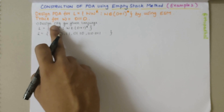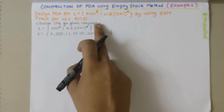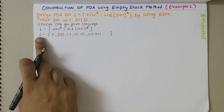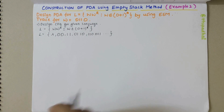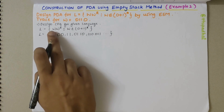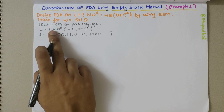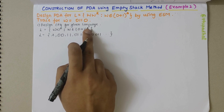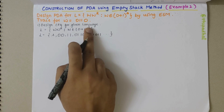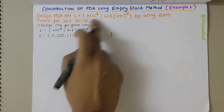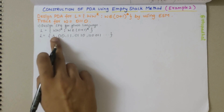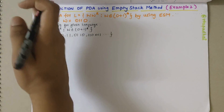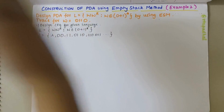My first step is to design a CFG for the given language. The language L is defined where w belongs to {0,1}*. Since star means Kleene closure, it includes the empty string lambda as well.